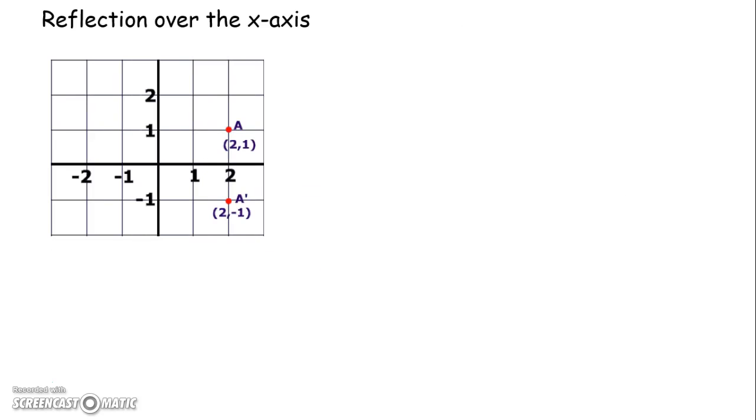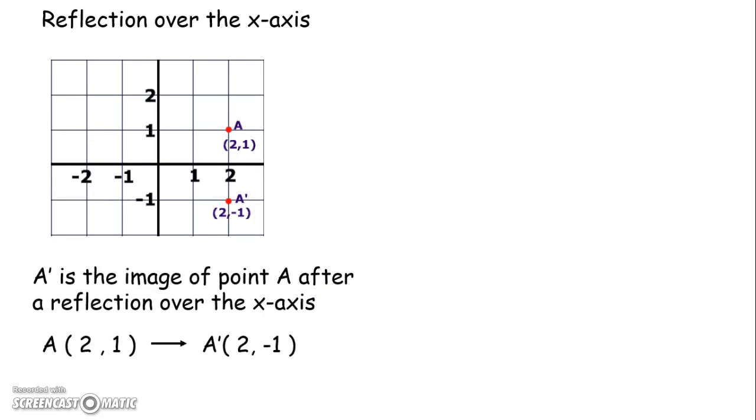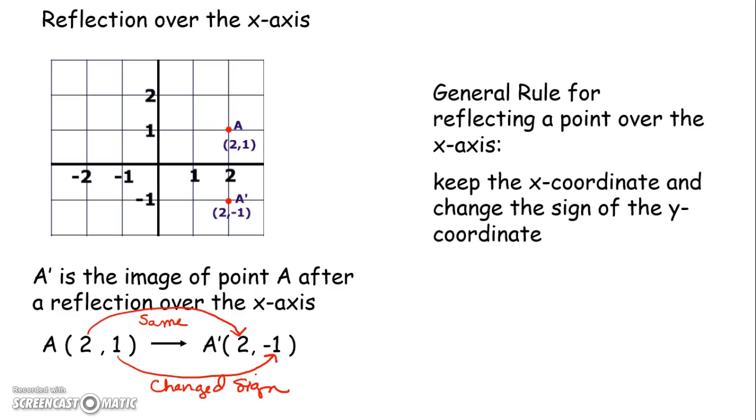So we're going to just focus on what happens to the coordinates when we reflect over the x-axis. So if we look at A and A prime, if I take a look at my x coordinate, my x coordinate seemed to stay the same. If I take a look at my y coordinate from A to A prime, the only thing that happened was it changed sign. And that's actually the general rule. The general rule for reflecting a point over the x-axis is you keep the x coordinate the same and you change the sign of the y coordinate.